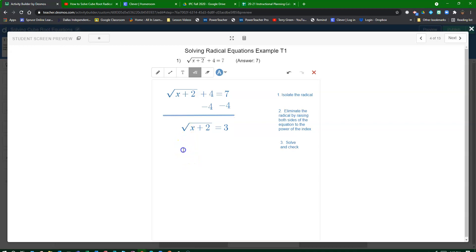So if I square both sides, I'm going to end up with x plus 2 equals 3 to the power of 2.